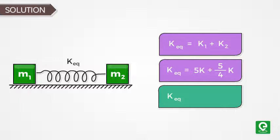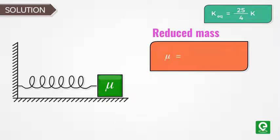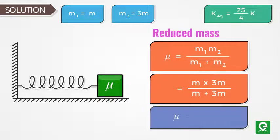Then k_equivalent = 25k/4. The reduced mass of the system is μ = (m1 × m2)/(m1 + m2), where m1 = m and m2 = 3m. This gives reduced mass μ = 3m/4.